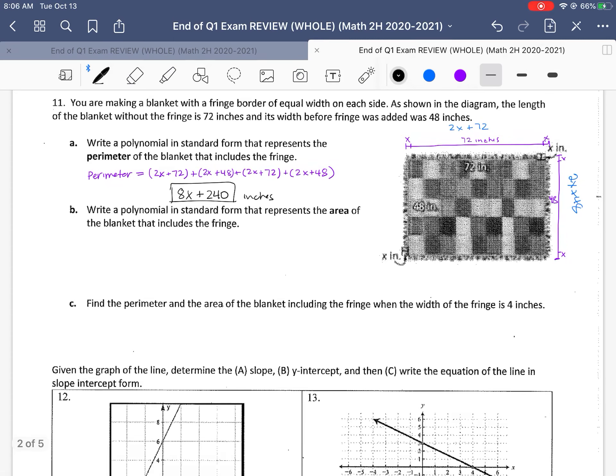Write a polynomial in standard form that represents area. So area is length times width. So again, our length was 2x plus 72 multiplied by the width is 2x plus 48. And this looks like a good foiling problem. So we distribute 2x, 2x is 4x squared. 2x times 48 gives us 96x. And then we multiply the 72 by the 2x, which gives us 144x. Plus 72 times 48 is 3,456. If we combine those middle terms, we get 4x squared plus 240x plus 3,456. And this would be square inches because it's area that we're looking at there.